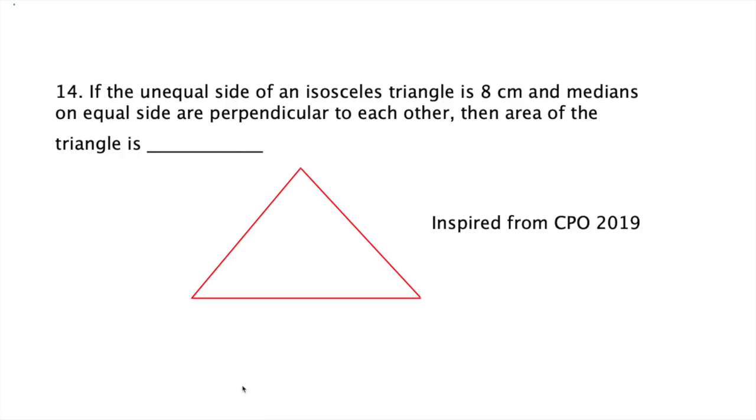Say this one is an isosceles triangle in which these two sides are equal, and now we have to draw medians on the equal sides. These are the medians on the equal sides. Assume these medians are perpendicular. It's not visible as per the figure, but assume this one is perpendicular, meaning 90 degrees at each side.